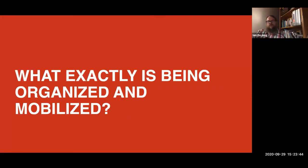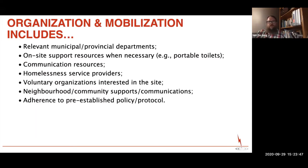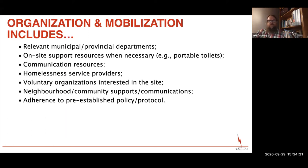So what exactly is being organized and mobilized? At a high level, there will be relevant municipal or provincial departments: income supports, coordinated access, public right-of-way, transportation, bylaw enforcement, police. You can go through a range of departments that might have an interest — even things like wastewater treatment. An encampment on a floodplain might involve conservation authority people or park staff. On-site support resources that are necessary — portable toilets being one example — obviously vary based upon the size and scope of the encampment.